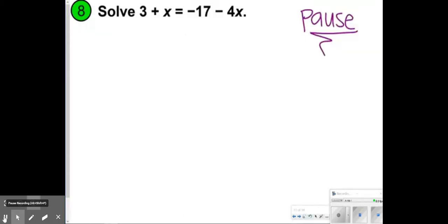So what I did is move the negative 4x to the other side where the x is. Negative 4x plus x is 5x, so we have 3 plus 5x equals negative 17. Then subtract 3 from both sides.